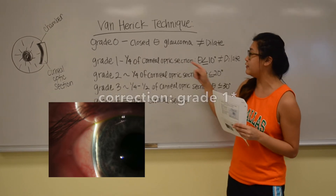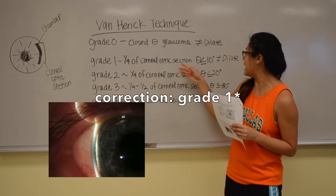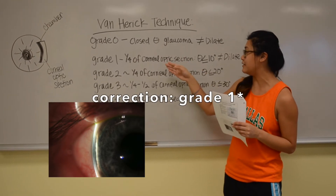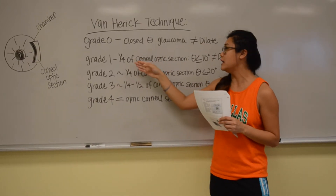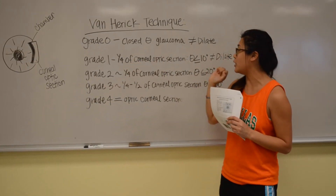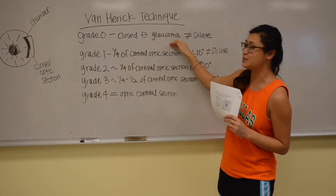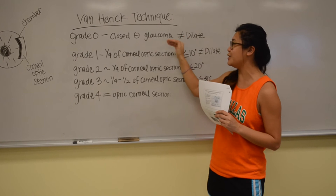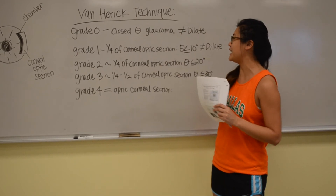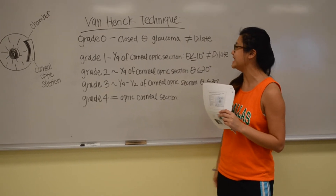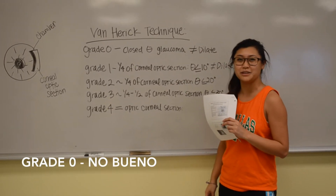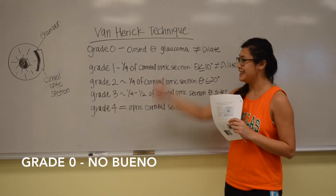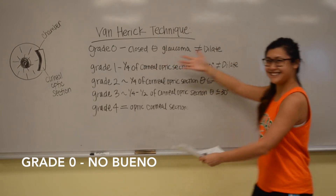Grade 1 is when it's less than a quarter of the corneal optic section, and grade 0 is when it's closed — and that's when we have glaucoma. So these are your grades.